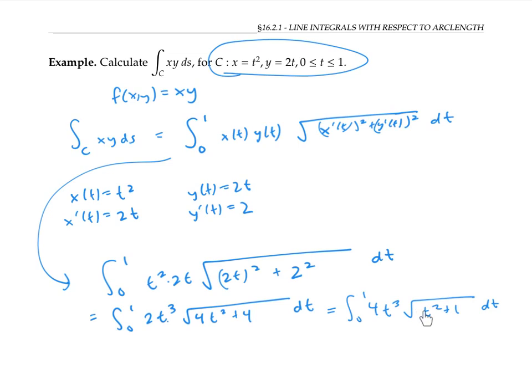Now I wish I could do a u substitution and just let u be the stuff inside the square root sign. The only tricky part is that the du, which is 2t dt, is not exactly appearing outside here. I'm still going to have a t squared left over. But if I just plunge ahead and try it anyway, I'll change my bounds of integration also. So when t is zero, u is going to be one, and when t is one, u is going to be two.